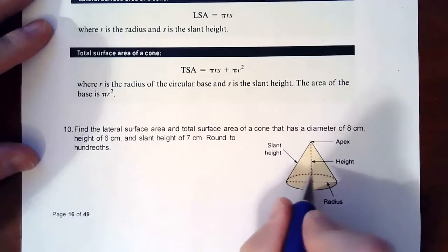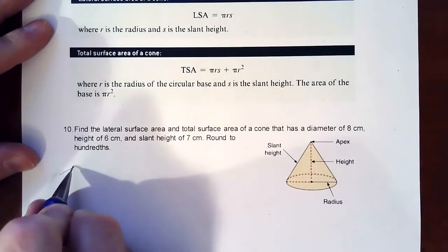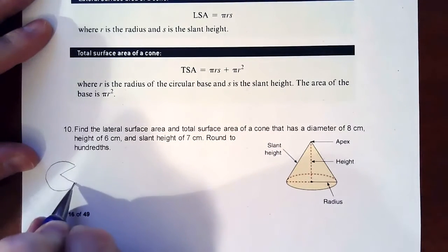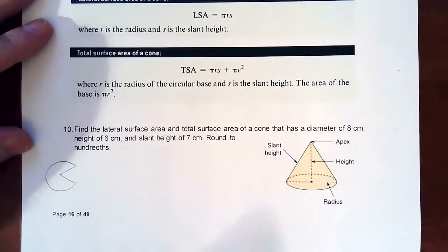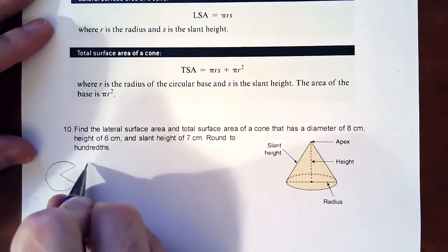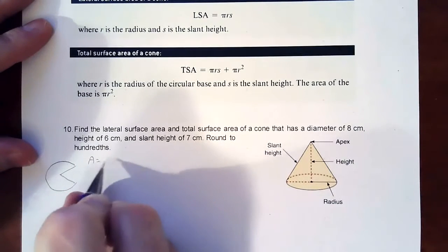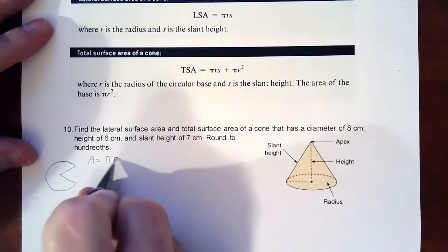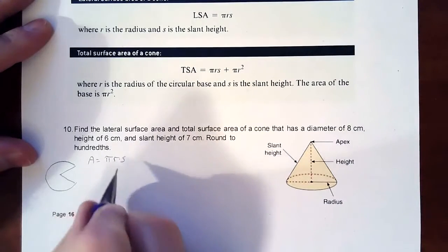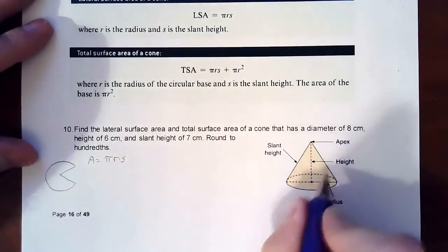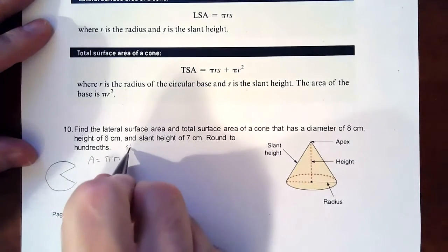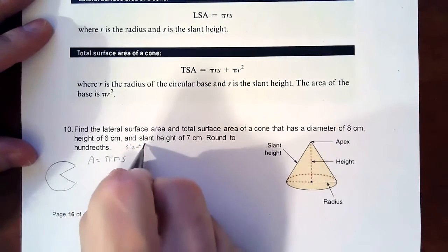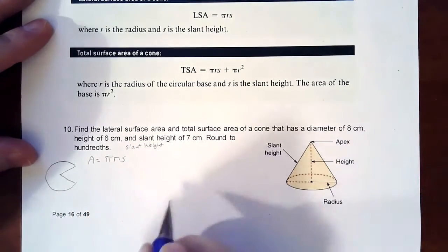If you undo a cone, it makes a Pac-Man shape. When you connect the two edges, that pops it up to make the cone. To find your lateral area, the formula is π times radius times s, where s is the slant height.